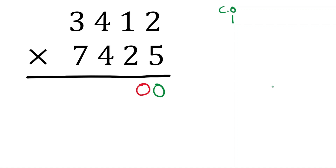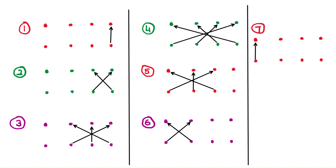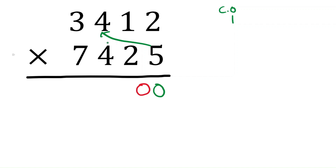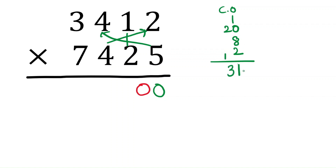In the third step we multiply ones with hundreds, and tens with tens, plus the carryover. Five times four is twenty, two times four is eight, one times two is two. Eight plus two is ten, ten plus one is eleven — write one in the answer and one is the carryover.